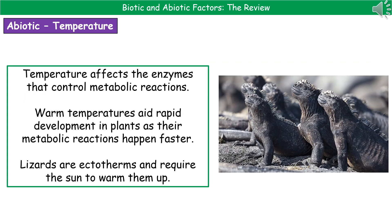The second abiotic factor is temperature. Temperature is a vital factor in affecting how enzymes work, and enzymes are key in a huge number of metabolic reactions inside living things. So if temperature is changing, it affects the enzymes and therefore those metabolic reactions. For plants, warm temperatures aid rapid development because all those metabolic reactions happen faster as the enzymes work more effectively.